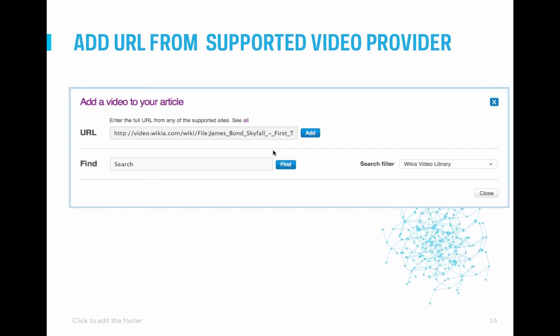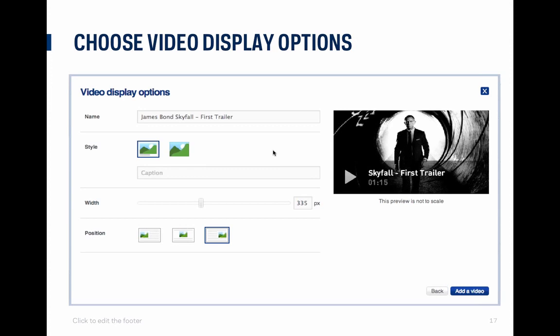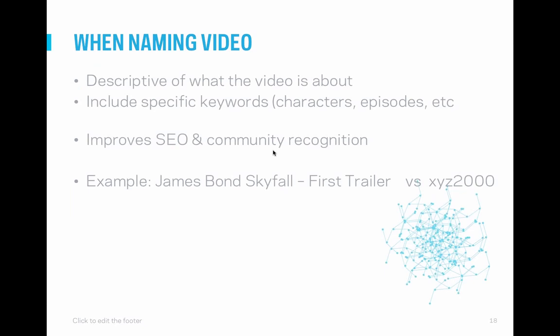The name of a video may not seem that important, but it makes quite a difference. Video names should be descriptive of what the video is about with specific keywords included. If the video is from a certain season, episode, or includes a certain character, this should all be in the name. This helps other community members know what the video is about and helps when the video is indexed for search, both on Wikia and for search engines. A specific name like 'James Bond Skyfall First Trailer' is much better than 'video: XYZ2000'.